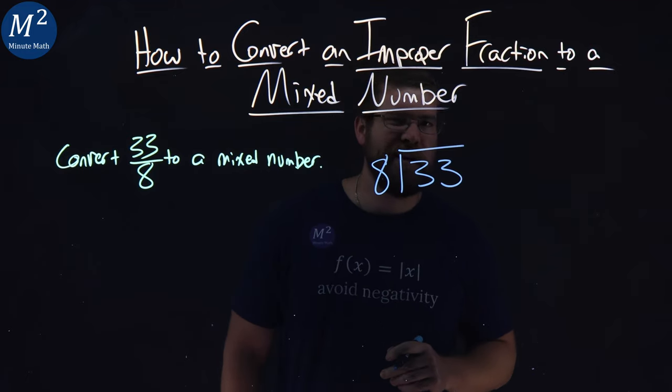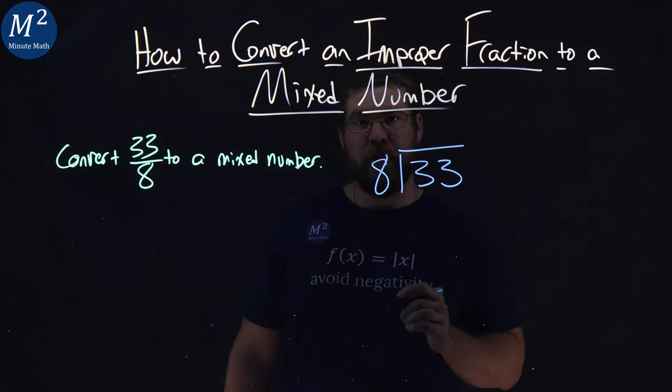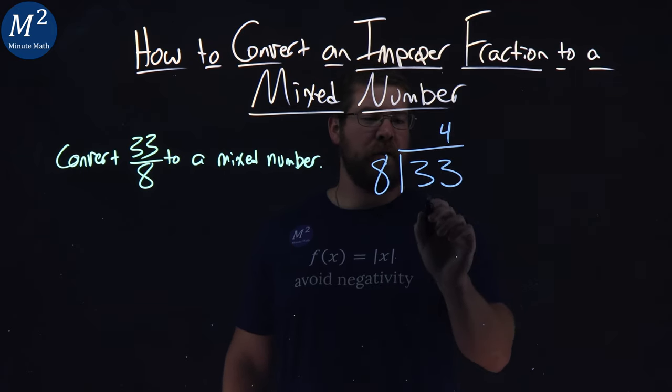Now, how many times does 8 go into 33? That's going to be 4 times. 4 times 8 is 32.